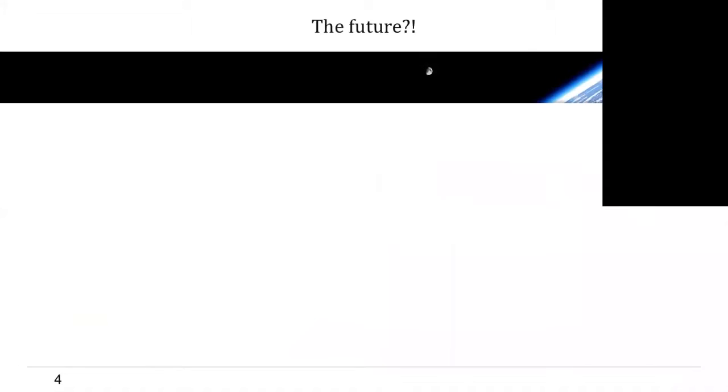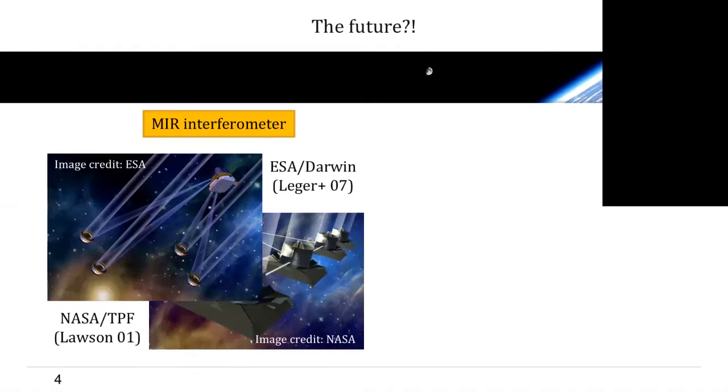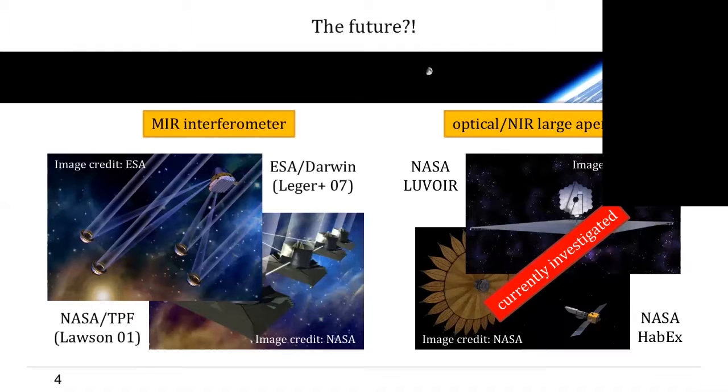So what are we going to do? Well, there are basically two different concepts for a large-class space mission dedicated to exoplanet science, and in fact, one of these two ideas is not new. Both ESA and NASA have been looking into long-baseline nulling interferometers operating in infrared in the early 2000s already, and at the moment, NASA is studying two optical near-infrared large aperture missions known as LUVOIR and HabEx.